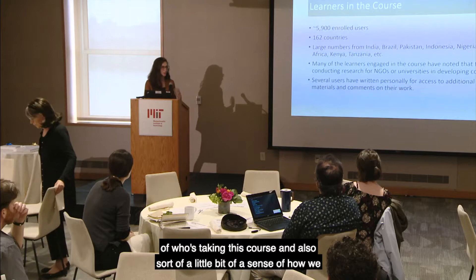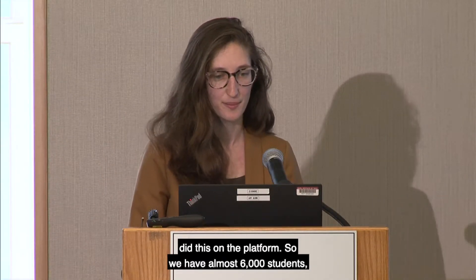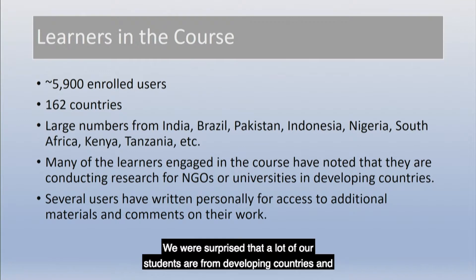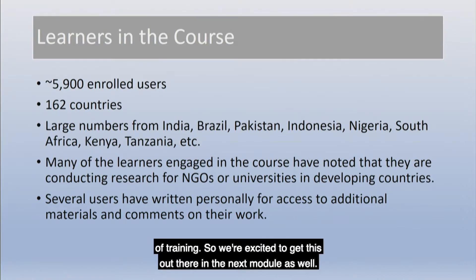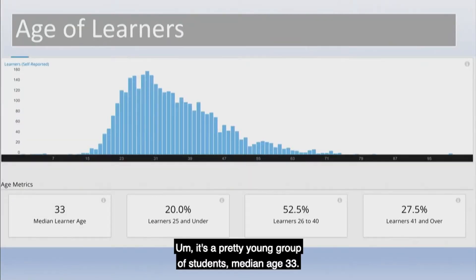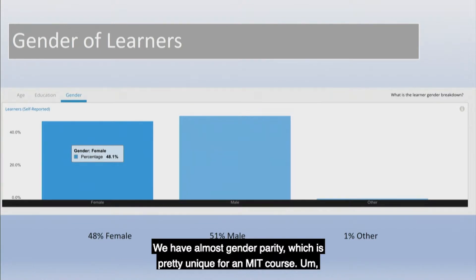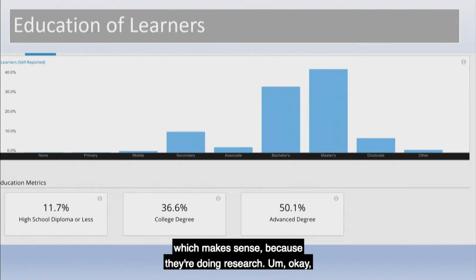I wanted to give you a sense of who's taking this course and how we did this on the platform. We have almost 6,000 students from 164 countries. We were surprised that a lot of our students are from developing countries, doing research for NGOs or universities, with many people in refugee camps. There seems to be a big hunger for this kind of research methodology training. It's a pretty young group — median age 33 — with almost gender parity, which is pretty unique for an MIT course. It's a highly educated group, which makes sense because they're doing research.